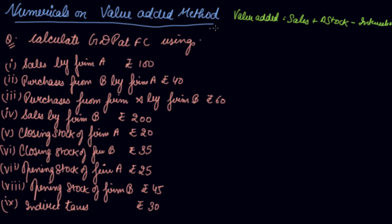In order to solve this question, let's first calculate the value addition of firm A. The sales of firm A is Rs. 100 in lakhs. Purchase from B by firm A, so firm A is purchasing something which is the intermediate for firm A that is minus 40. You would subtract intermediate, right?